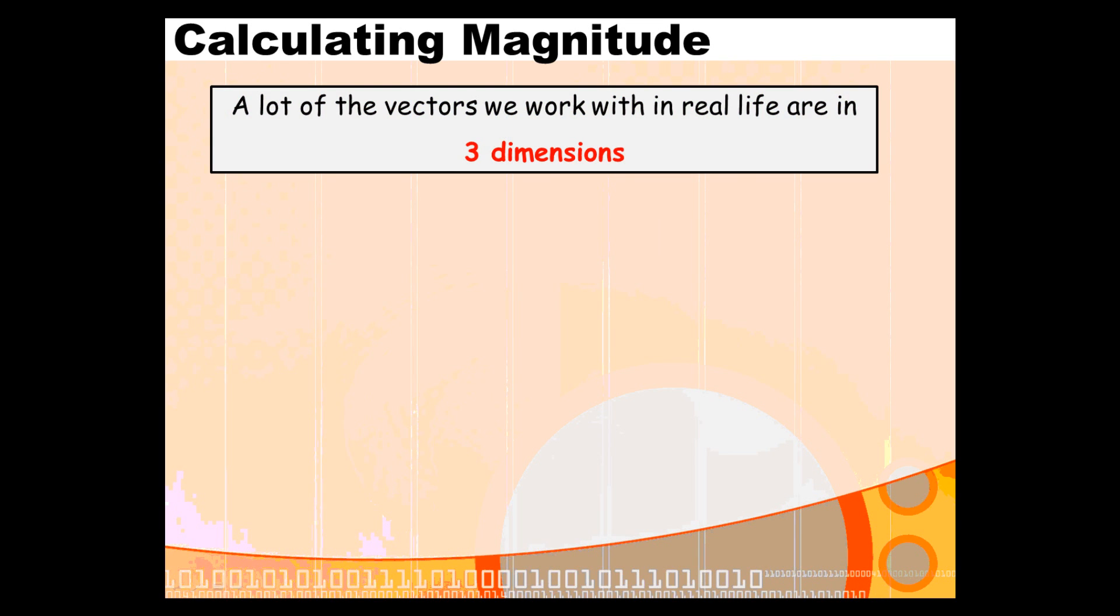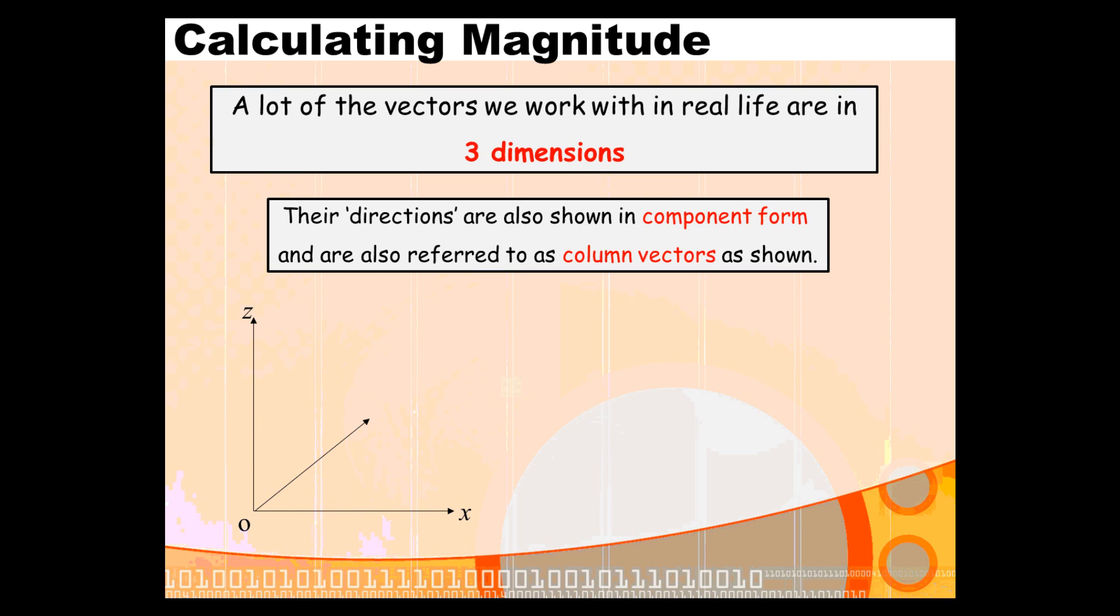We live in a 3D world, and a lot of the vectors that we will come across will involve three components. When you have a 3D vector, you're going to have three components. Let's imagine you've got a point in three dimensions, we'll call it A, and let's say you want to describe the vector from the origin to A.